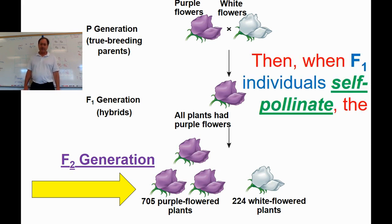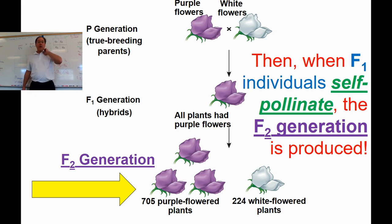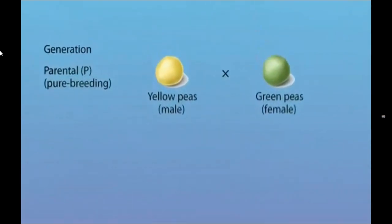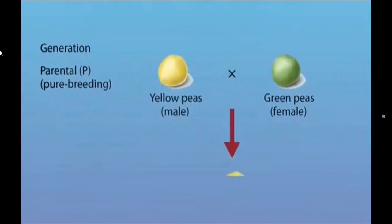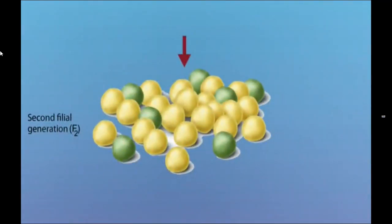Then he took two of those F1 hybrids — knowing they must have had a white factor and a purple factor — put their genes together to make another set of offspring, called the F2 generation. The white factor was exhibited again and he got some white-flowered plants. He looked at many things: seed pod color and shape, seed shape and color, height, flower color — seven famous characteristics. Homozygous yellow seed plants crossed with homozygous green seed plants produce all heterozygotes — all yellow — in the F1 generation. The frequency of each allele stays at 50%. When those F1 heterozygotes are crossed, the F2 generation shows a 3:1 phenotypic ratio of yellow to green seeds.